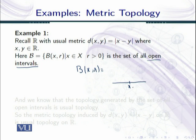Now let us mark what is the shape of that interval whose center is x. The endpoints are x - r and x + r. So this B(x,r) is the open interval (x - r, x + r). So B consists of the set of all open intervals, and we know that the topology generated...